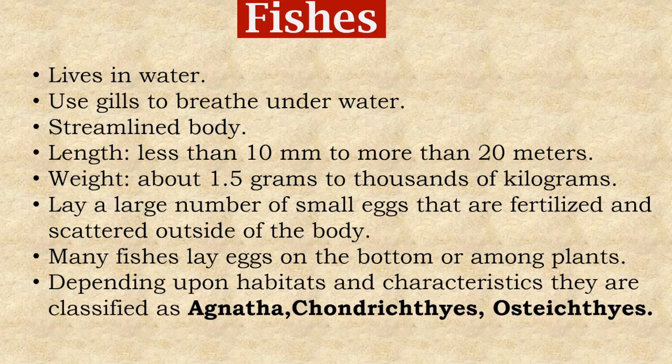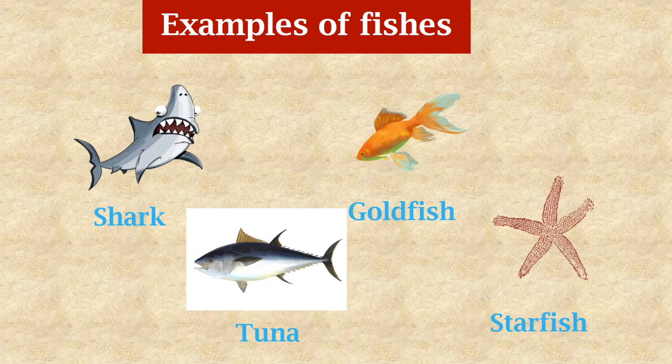Depending upon habitats and characteristics, fishes are classified as Agnatha, Chondrichthyes, and Osteichthyes. There are plenty of examples of fishes. Shark, goldfish, tuna, and starfish are a few of them.